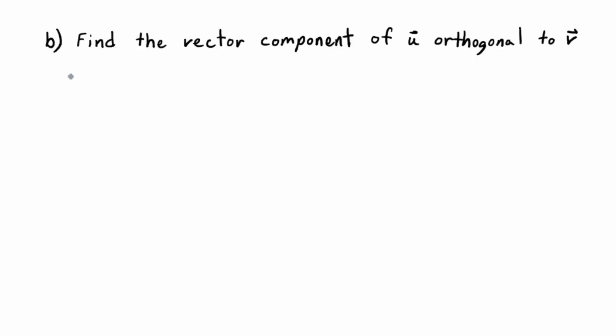It says, for part b, find the vector component of u orthogonal to v. Wait a minute. What does orthogonal mean? Perpendicular. Okay. You're going to need a picture. I haven't defined this yet.